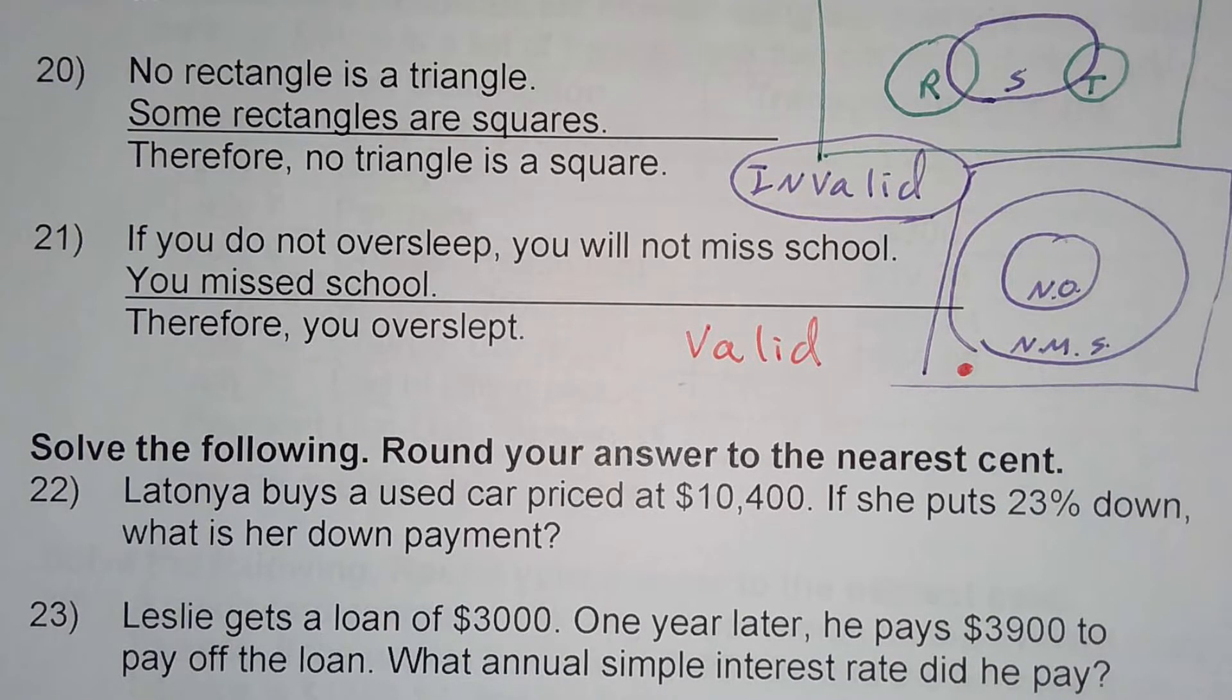So again, on the final exam, if you have a problem like this, you'll have to not only pick out if it's valid or invalid, but you also have to pick out the correct Euler diagram that goes with it.